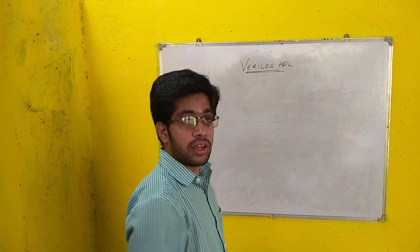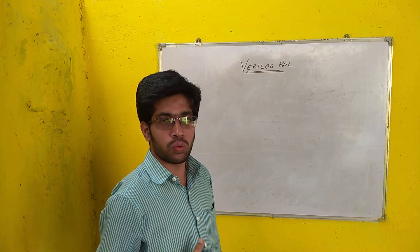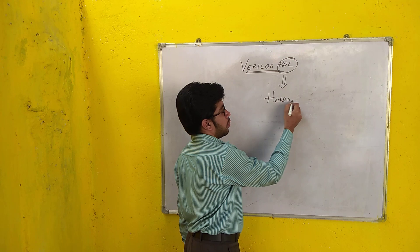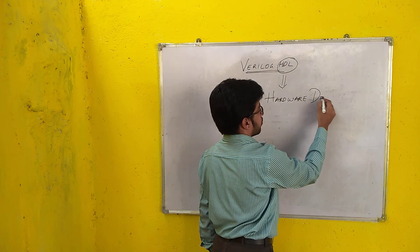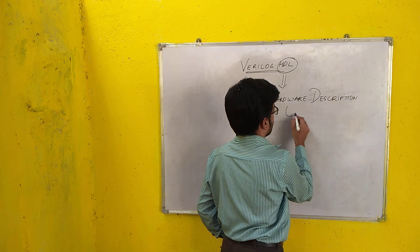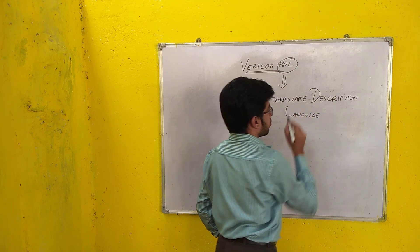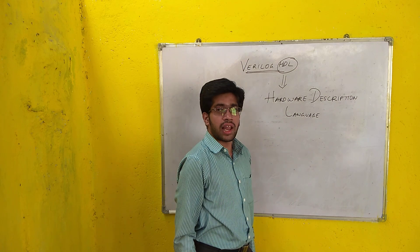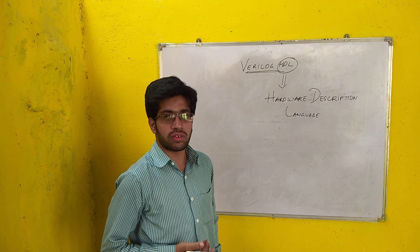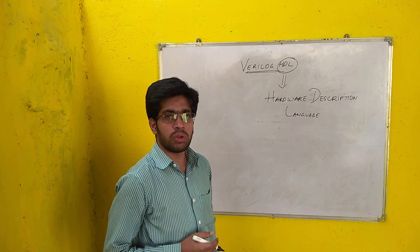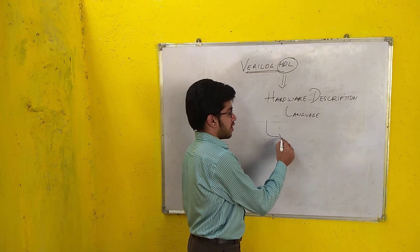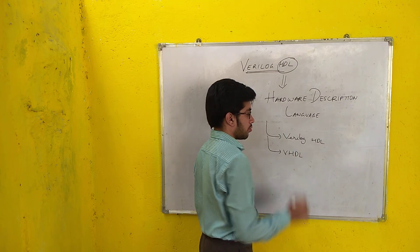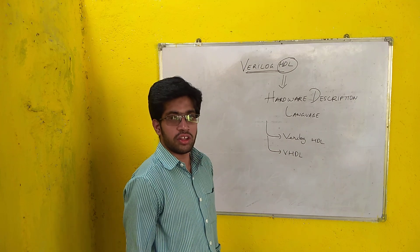We will talk about Verilog HDL. First we will start with HDL, then we will proceed to how we come to Verilog. HDL stands for Hardware Description Language. A hardware description language is a language through which you design digital circuits such as half adder, full adder, multiplexer, and many other combinational or sequential circuits. Examples of HDLs are Verilog HDL and VHDL — both are majorly used to design digital circuits.